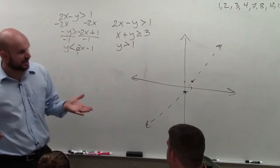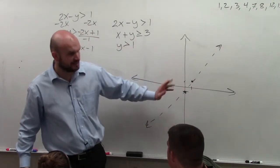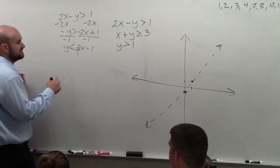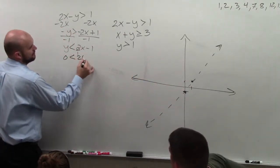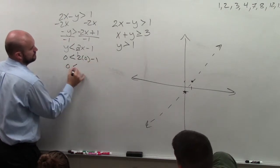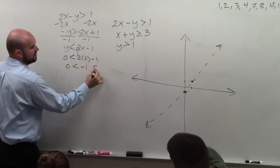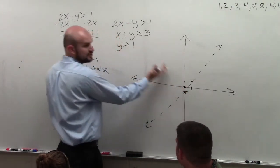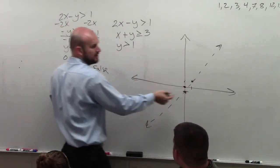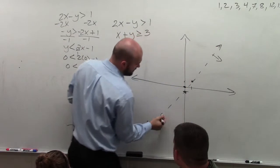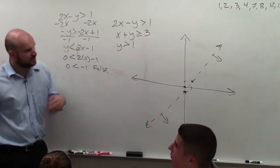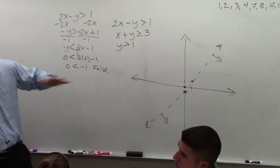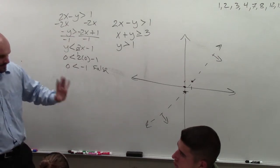The next thing we want to do is determine the shading. We choose a test point that's not on the line — the best test point is (0, 0). Plugging it in gives a false statement, so my test point is false. I'm not going to shade towards my test point; I'm going to shade away. When doing systems of inequalities, I like to just put arrows first and then shade at the end.